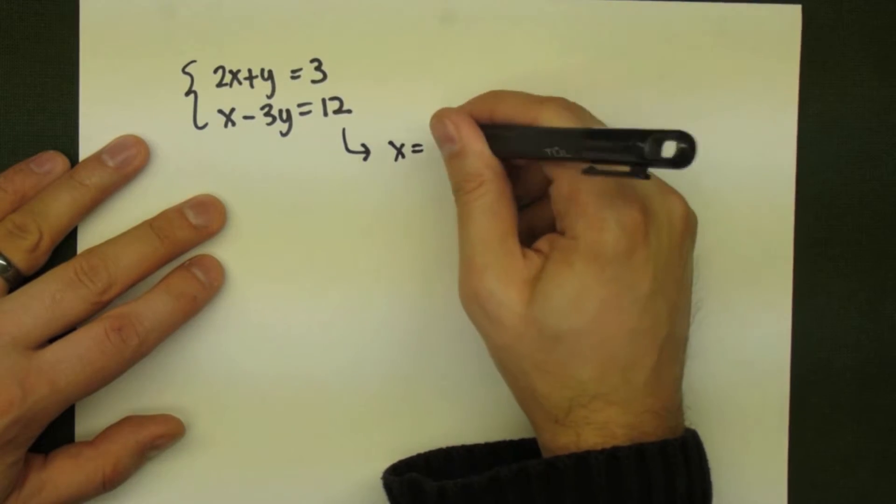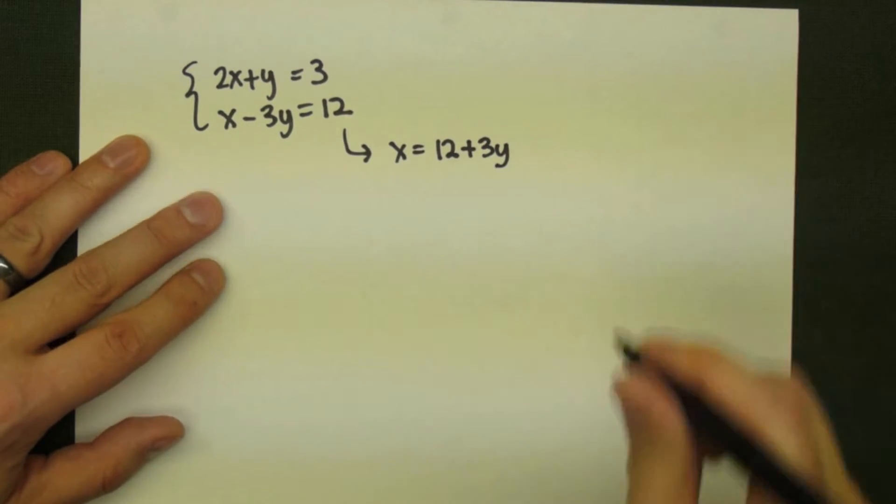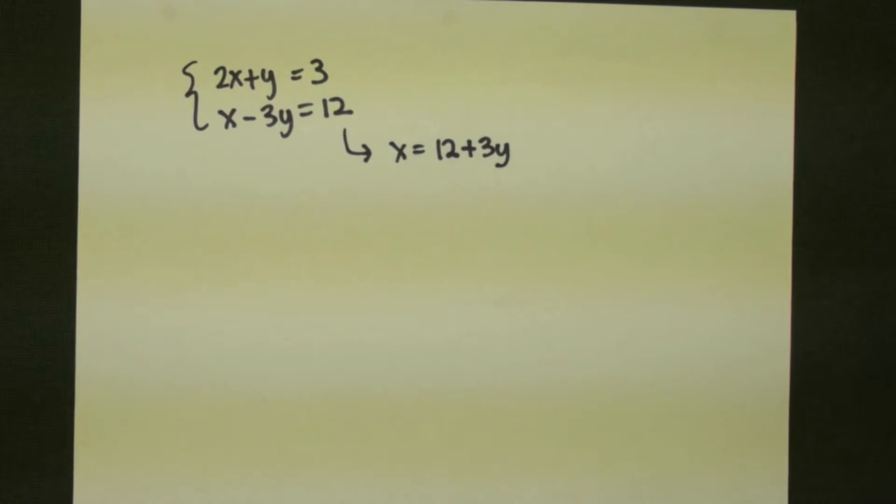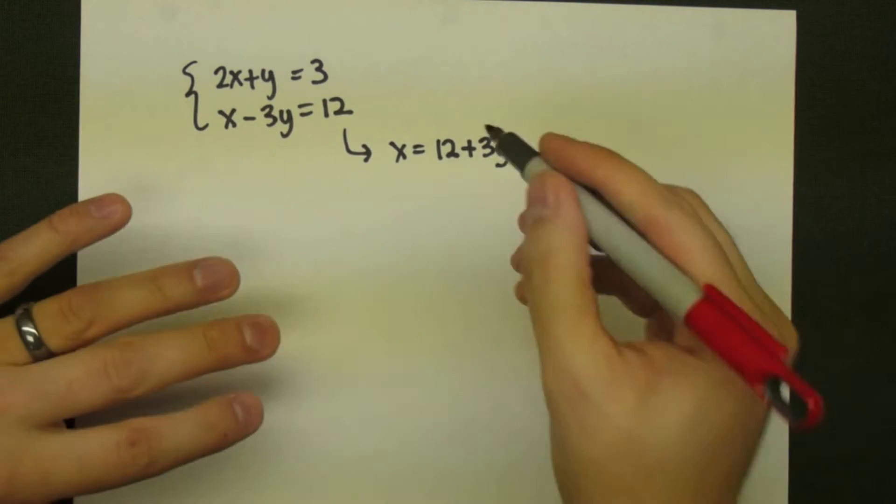To refresh you on how you actually solve these, we are going to use a substitution method. Taking the second line and solving for x, we have x is equal to 12 plus 3y.